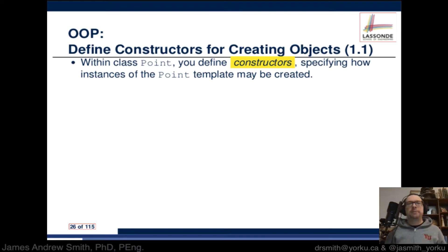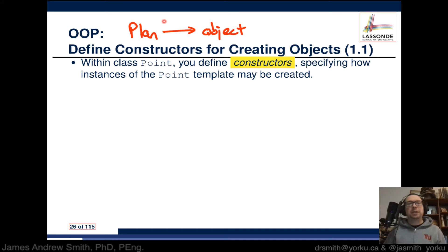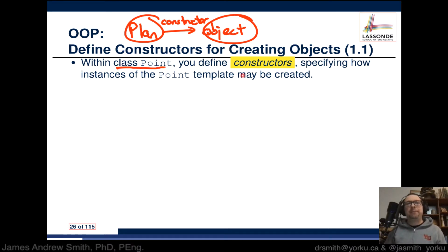So, defining constructors for creating objects. You're linking the plan — the class — to the object, and that connection is the constructor, like the construction crew that takes your blueprint and creates the actual object from it. Within a class like Point, we define constructors inside the plan, specifying how instances of the Point template may be created.